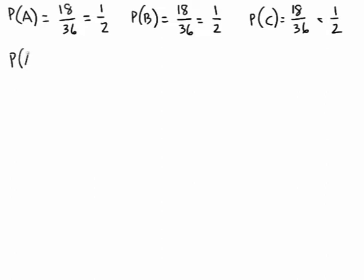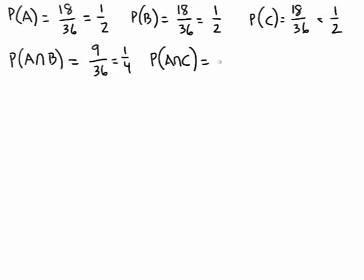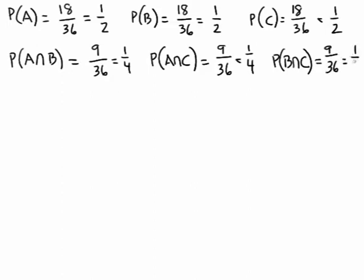Now let's consider the intersections of those events. The probability of A intersect B — that is, the probability of getting a red even number — well there are nine such numbers out of 36, so the probability is one-fourth. The probability of A intersect C is the probability of getting a red number that's no greater than 18; again nine such numbers out of 36, so probability is one-fourth. And the probability of B intersect C is the probability of getting an even number that's no greater than 18; there are nine such numbers out of 36, which again reduces to one-fourth.